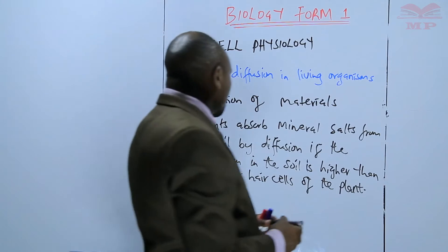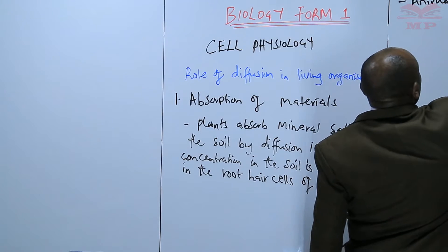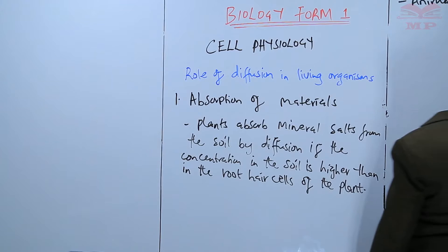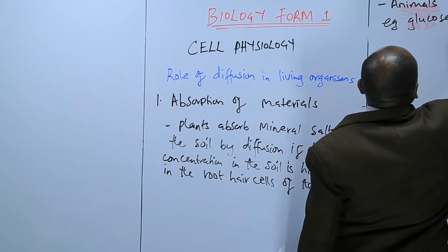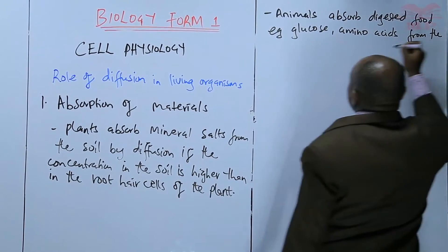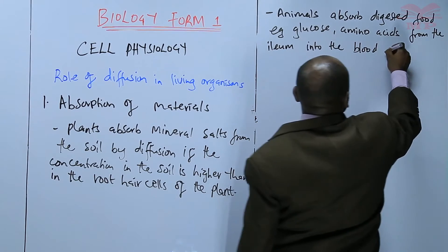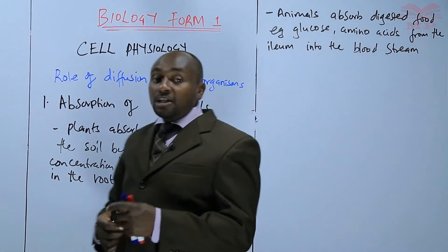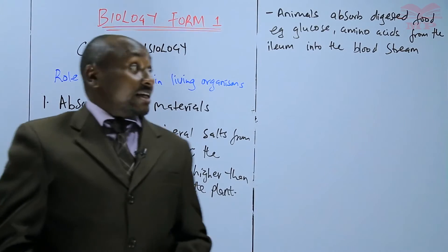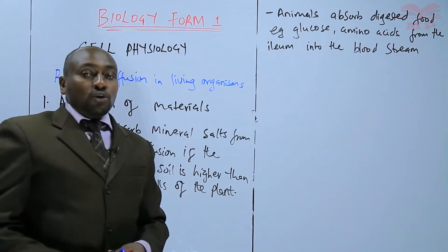Number two, still on the absorption of materials, let's give an example of animals. Animals absorb digested foods — for example, glucose and amino acids — from the ileum into the bloodstream. Diffusion is important during the absorption of digested food from the ileum into the bloodstream because in the ileum there is a higher concentration of digested food than in the blood.